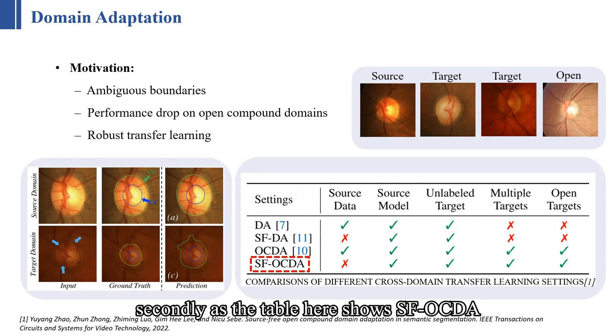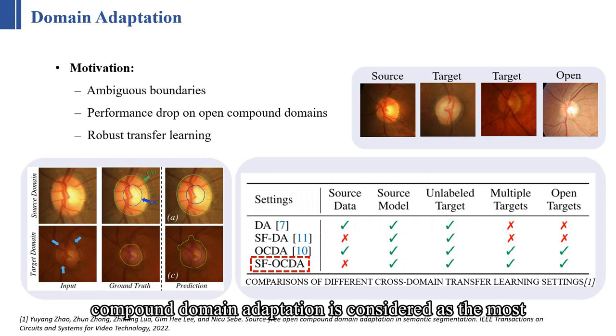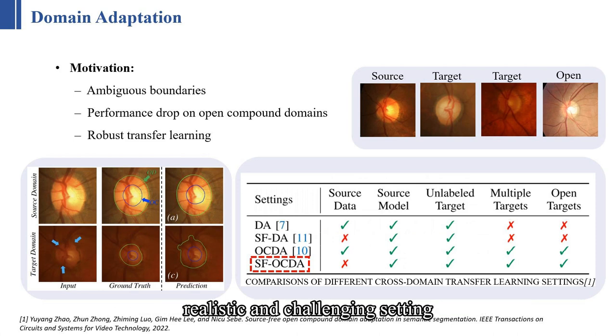SFOCDA, source-free open compound domain adaptation, is considered as the most realistic and challenging setting. And in this setting, we can only access the source model, not source data, during the target adaptation stage, evaluating the target model in multiple domains and open domains.